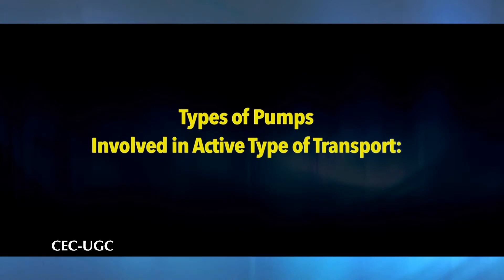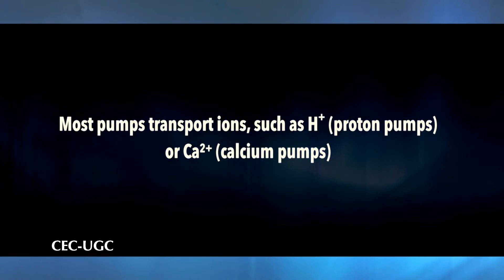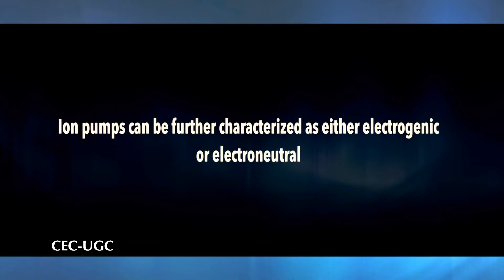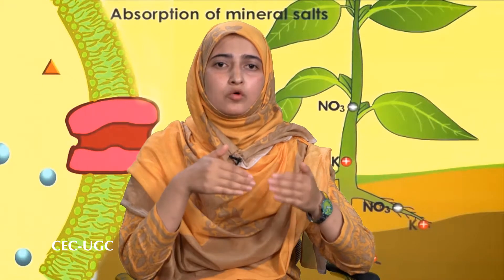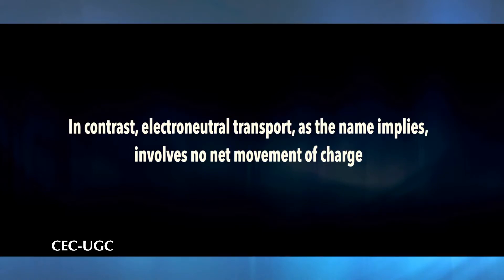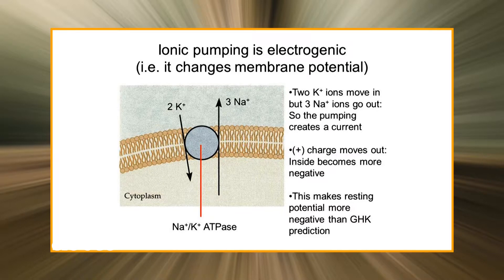Because active transport systems move solutes against a concentration or electrochemical gradient, they are frequently referred to as pumps. Most pumps transport ions such as H+ (proton pumps) or Ca2+ (calcium pumps). Ion pumps can be characterized as either electrogenic or electro-neutral. Electrogenic transport involves the net movement of charge across the membrane, whereas electro-neutral transport involves no net movement of charge. For example, the Na+/K+ ATPase of animal cells pumps 3 Na+ ions out for every 2 K+ ions in, resulting in a net outward movement of 1 positive charge.